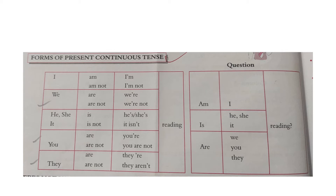Present continuous tense is used to indicate an action which is still going on at the time of speaking. From the given table, we can form sentences in the affirmative, negative, and interrogative. For example: 'We are reading the book on time' — affirmative in present continuous tense. 'They aren't reading the book' — negative in present continuous tense.